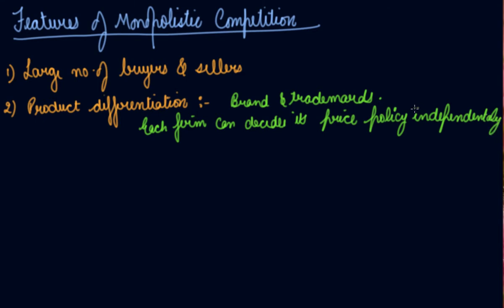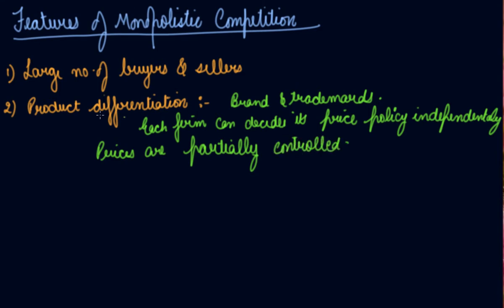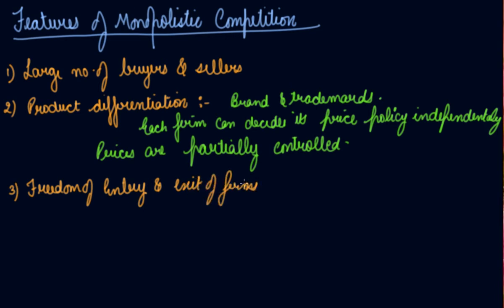Because of product differentiation, each firm can decide its price policy independently. It is partly a price taker and partly a price maker, so each firm has partial control over the price of its product. The third feature is freedom of entry and exit — if you and I want to launch a new toothpaste, say 'Kranti toothpaste,' there is freedom of entry and exit into the market.